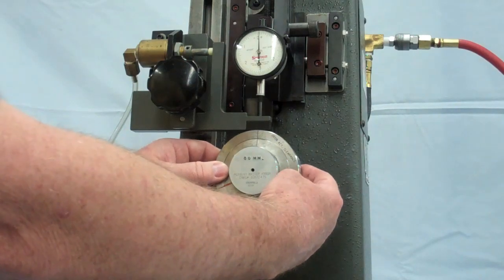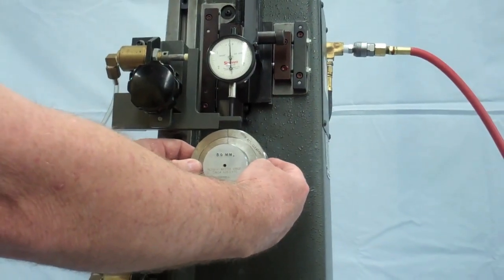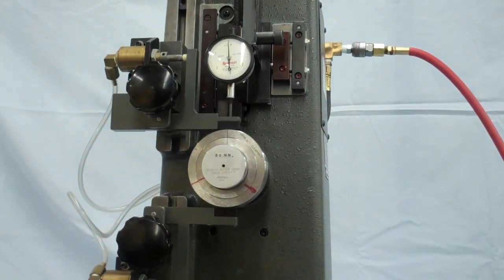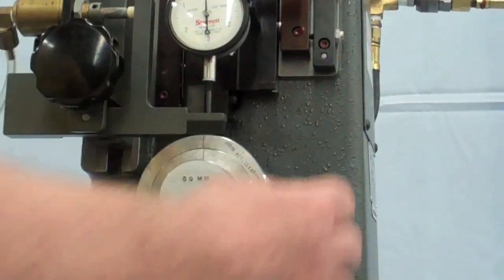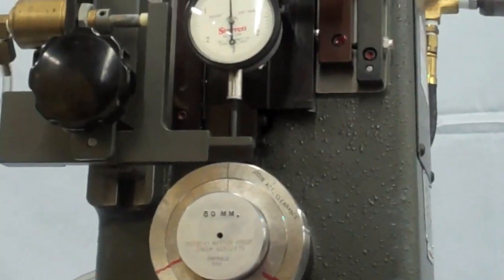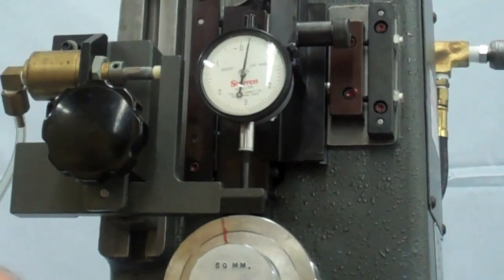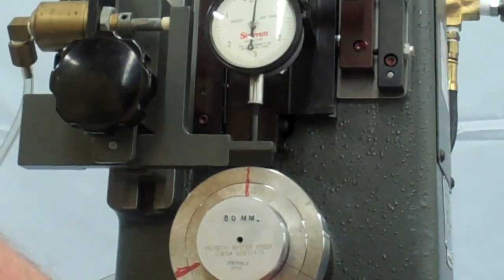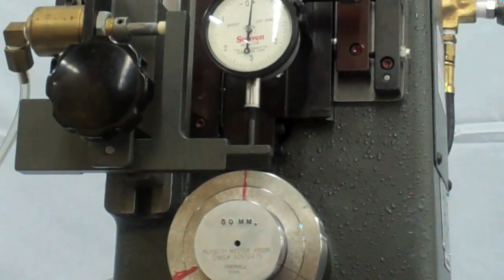In this video, you are seeing the gauge being mastered using a setup master. The inner and outer members are properly radially positioned by aligning the engraved lines on the face of the two members.